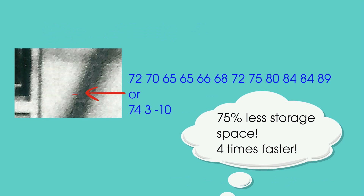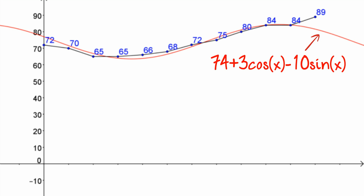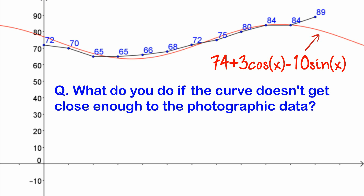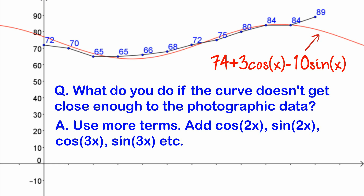There's a lot more to JPEG than I've shown you with this simple example, but I've tried to get at the core of JPEG using an explanation accessible to the widest number of people. There are three questions people typically ask. The first is: what do you do if the curve does not get close enough to the photographic data? The simple answer is you use more terms. As well as cos x and sin x, we start adding cos 2x, sin 2x, cos 3x, sin 3x, and so on, until we get close enough to the data.